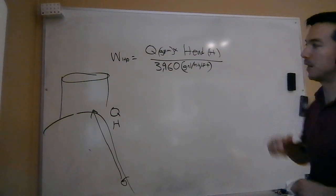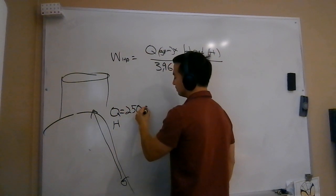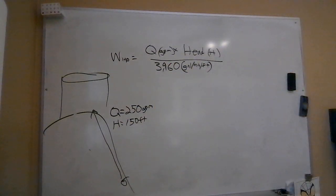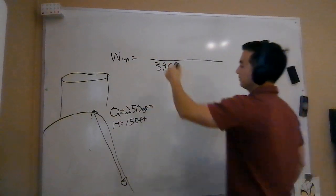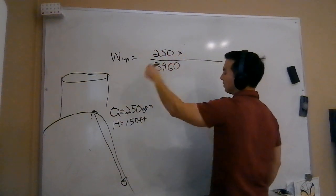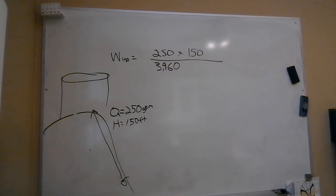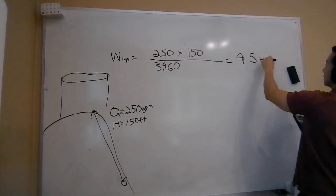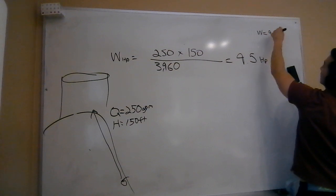For our water horsepower example, let's say our desired flow rate is 250 GPM and our total head is 150 feet. Using the formula: 250 GPM × 150 feet, divided by the conversion factor 3960, gives us a water horsepower of approximately 9.5 horsepower.